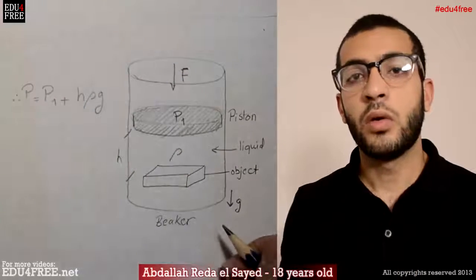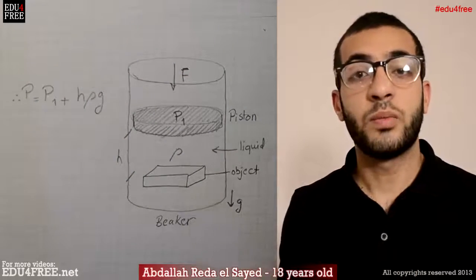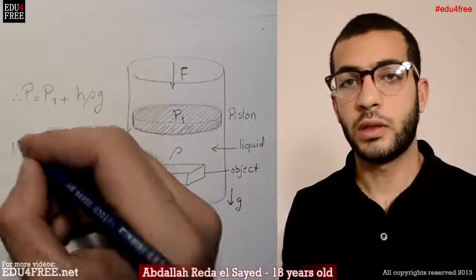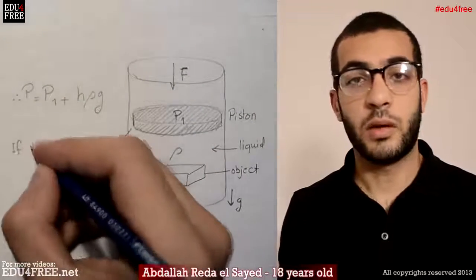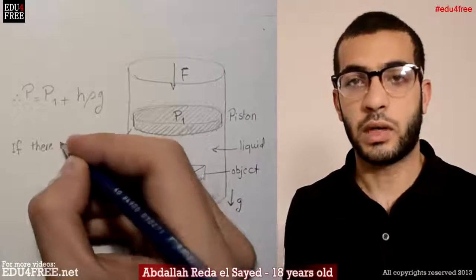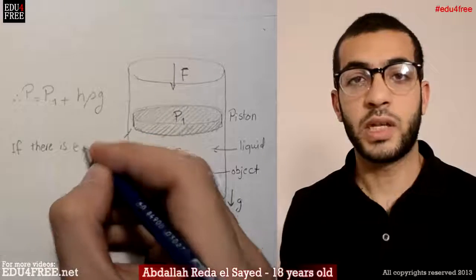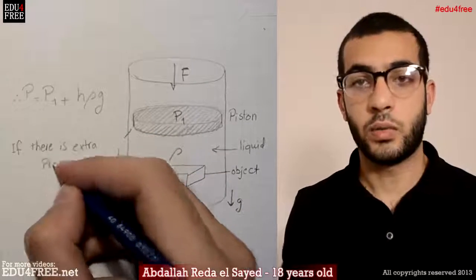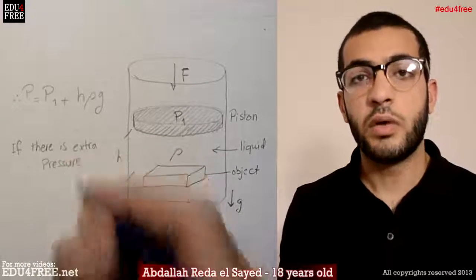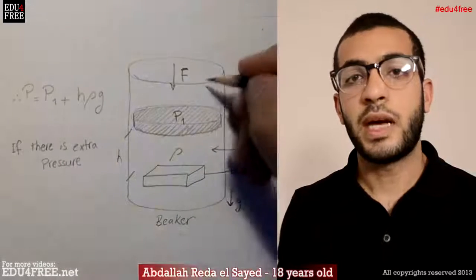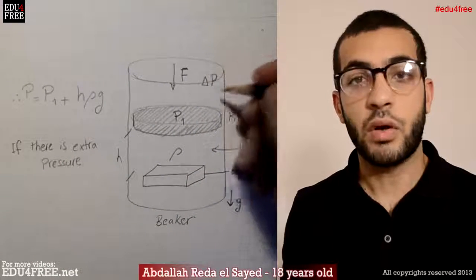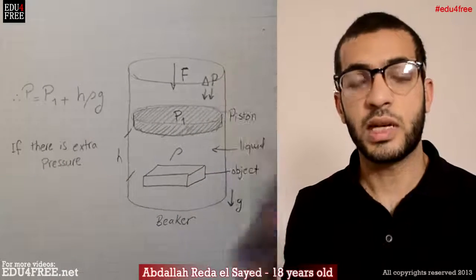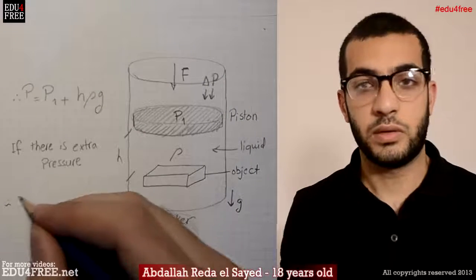Let's suppose that we exerted more and more pressure over the piston. Of course the liquid will not be compressed because liquids cannot be compressed, but at a certain point the beaker will break down. This means that the pressure over the object increases as we increase the pressure over the piston.